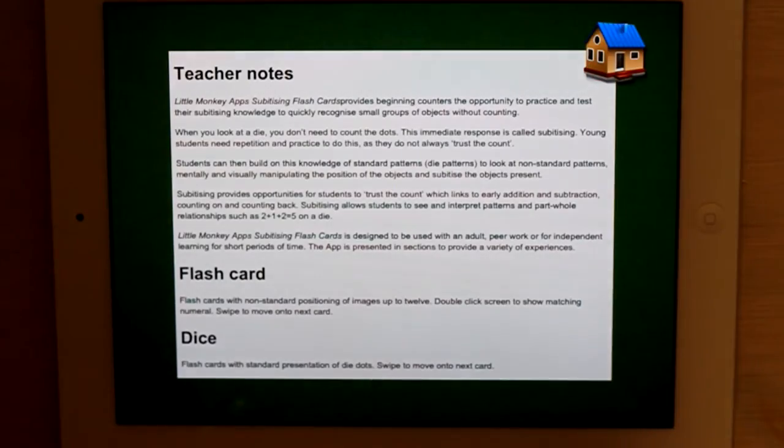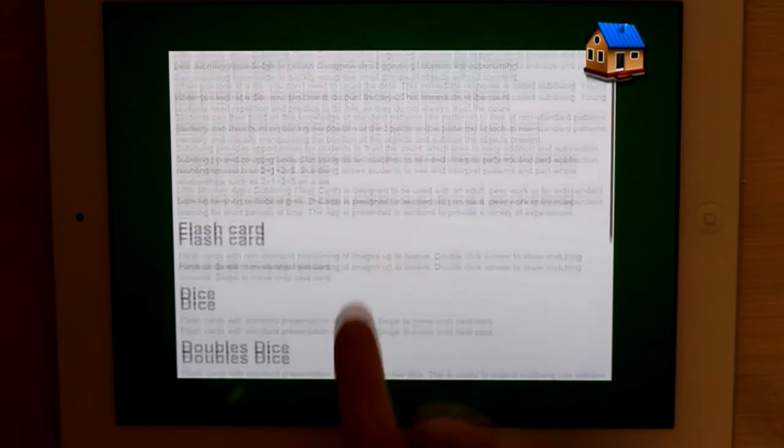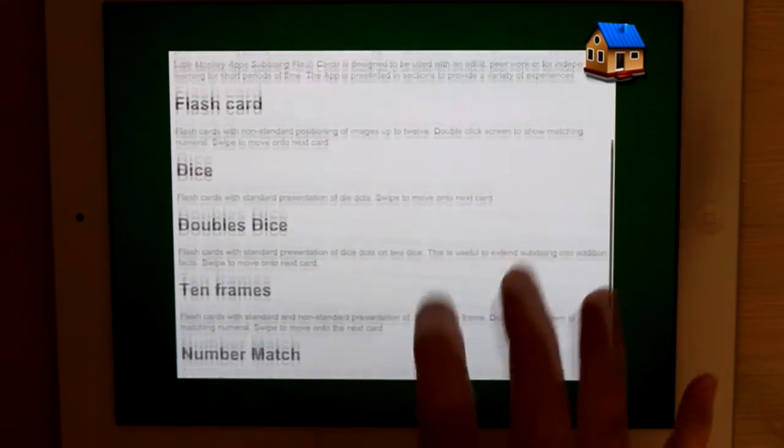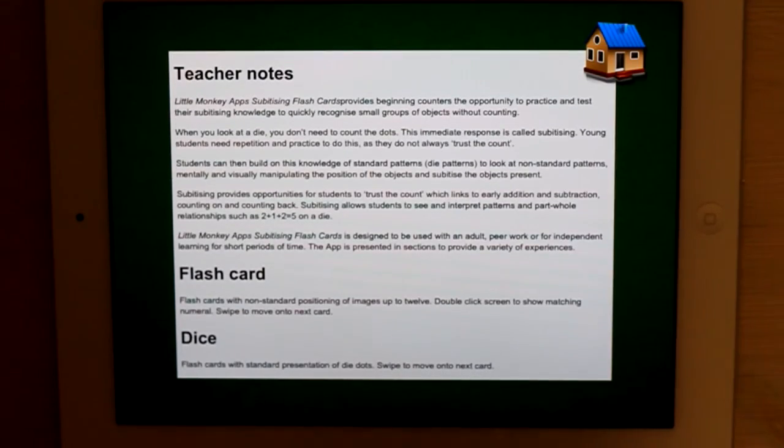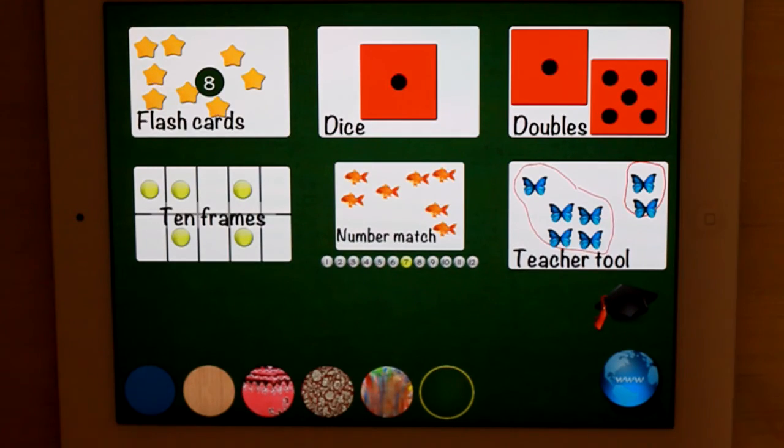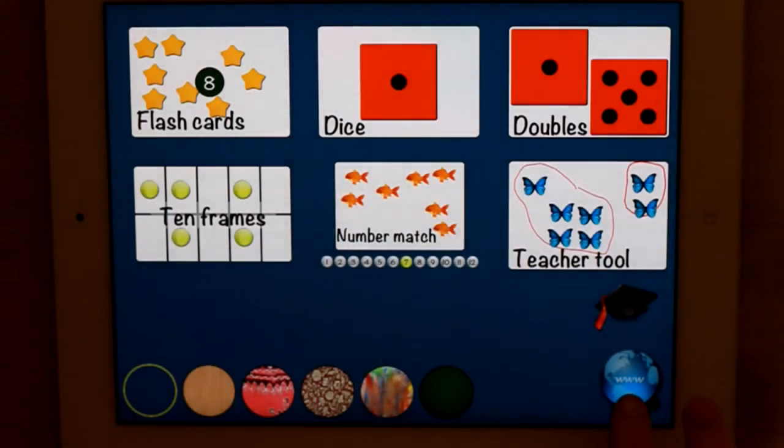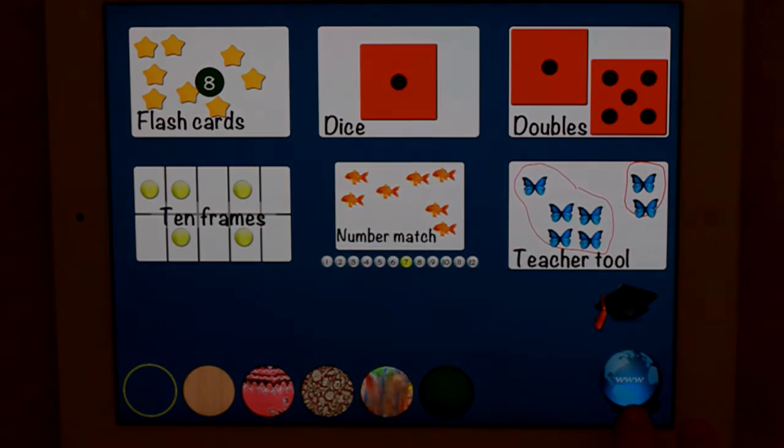Don't forget to check out this, as I've mentioned, it's got all of those activities there, and about the teach tool, there's some Australian resources there about what subitising is, and ways you can test for subitising. It's obviously for KS1 in the UK, or Prep 1, and even to Grade 2. And don't forget you can change your background, I like blue, and all of the games. So that's Little Monkey App's subitising flashcards. OK, thank you, friends.